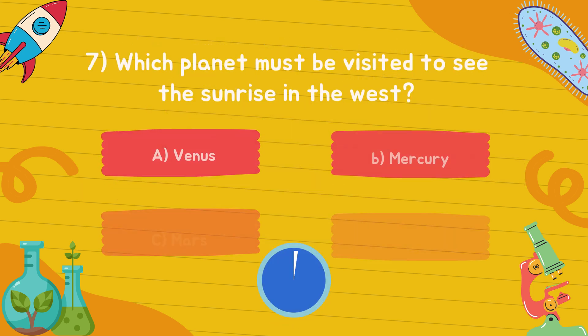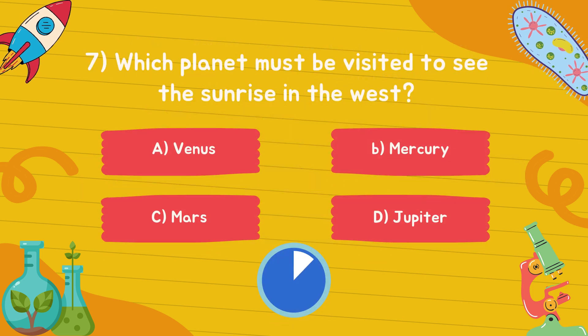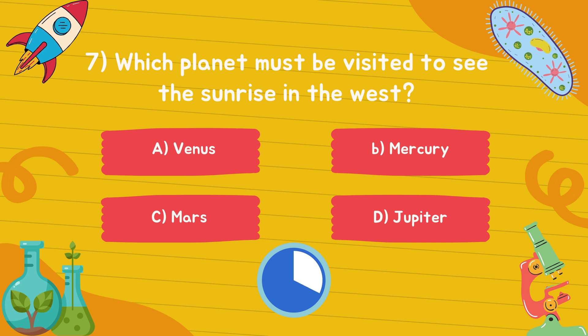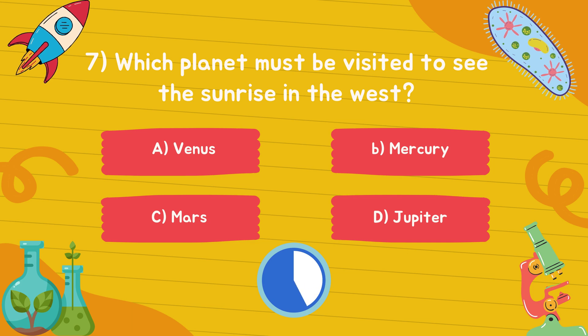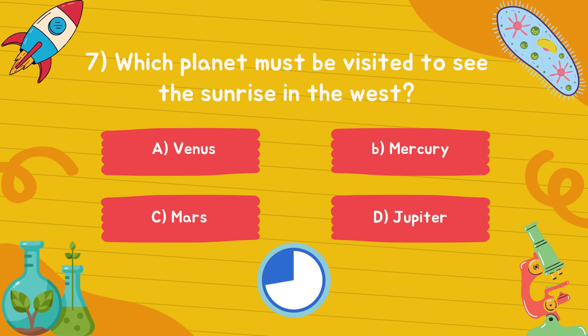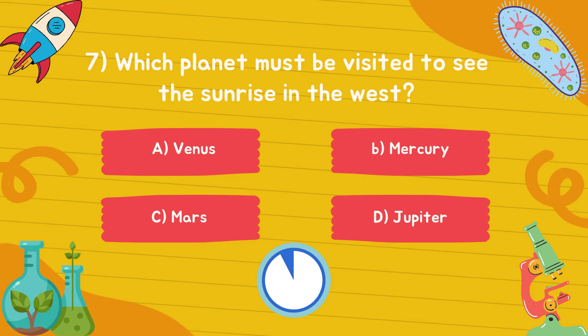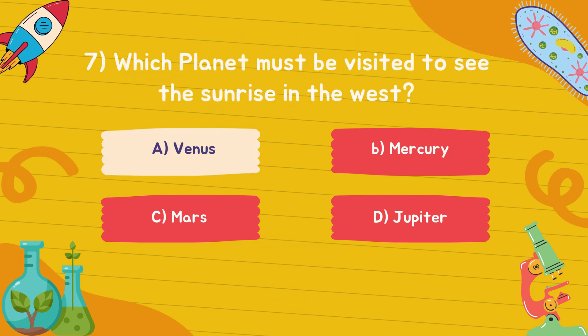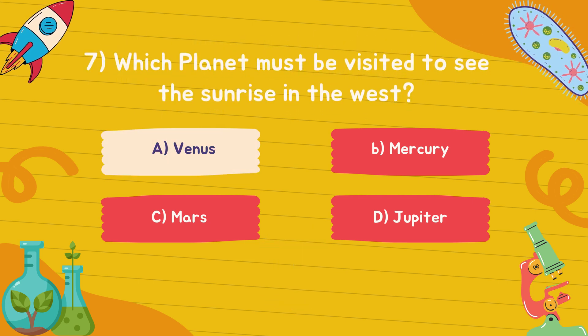Which planet must be visited to see the sunrise in the west? Answer is option A, Venus.